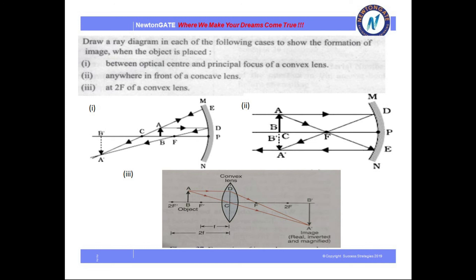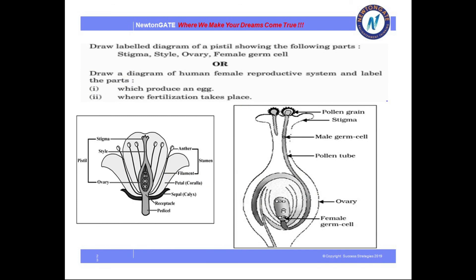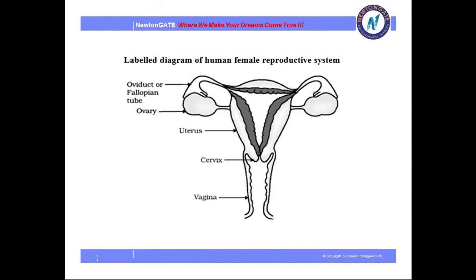You will definitely get at least one question from ray diagrams — possibly more. For reproductive organs, please practice very well: male reproductive organs, female reproductive organs, and reproductive organs of flowers. I suggest you practice all diagrammatic previous years questions. If you find any difficulty, you can contact us and we will try to solve your doubts. If you liked this video, please subscribe, like, share, and comment. Thank you.